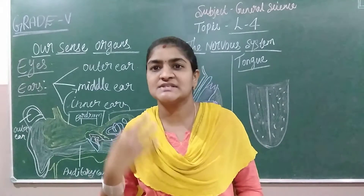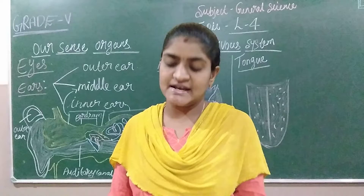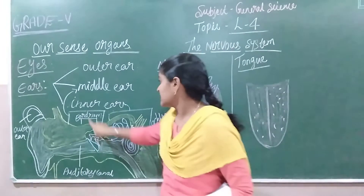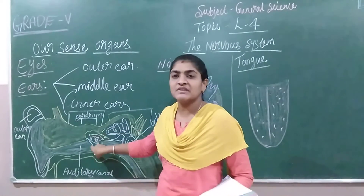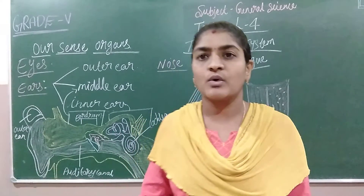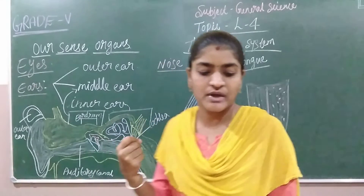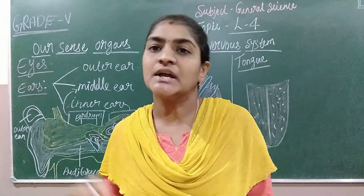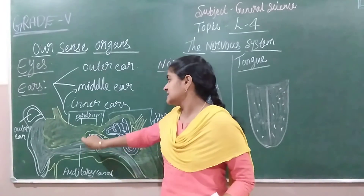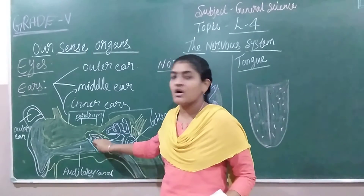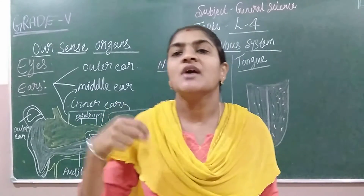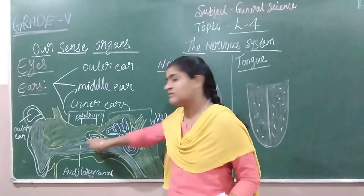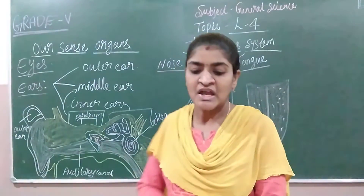In the middle ear there is an eardrum. When the sound passes through the eardrum, the eardrum starts vibrating. This eardrum is connected to three tiny bones, which are further connected to the inner ear. So whenever sound passes towards the middle ear, it starts vibrating, and the vibration causes the sound to travel through the bones and reach the inner ear.